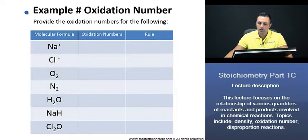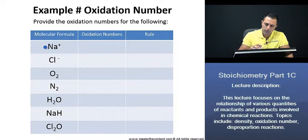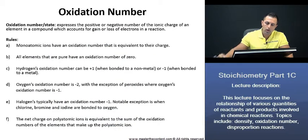For the example oxidation number, provide the oxidation numbers for the following. Now, beginning here with our sodium cation, we see that the oxidation number for that is going to be plus 1, and that's due to rule A. And if we recall, rule A states monatomic ions have an oxidation number that is equivalent to their charge.